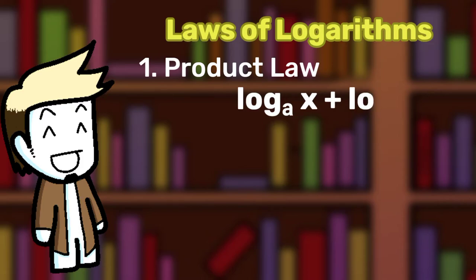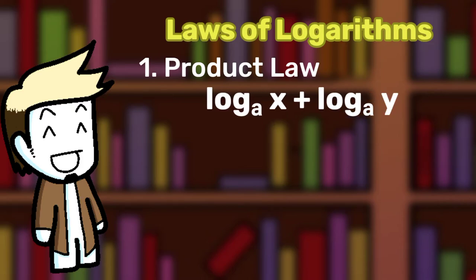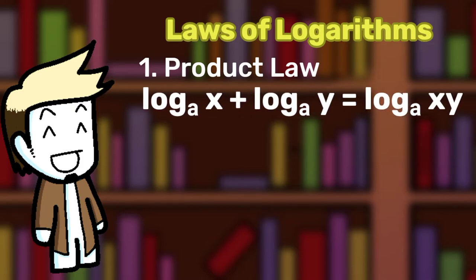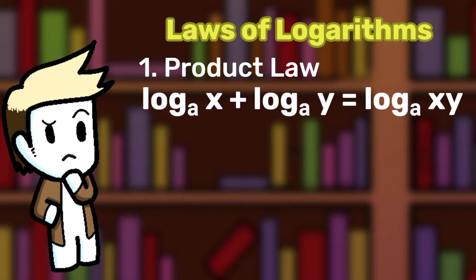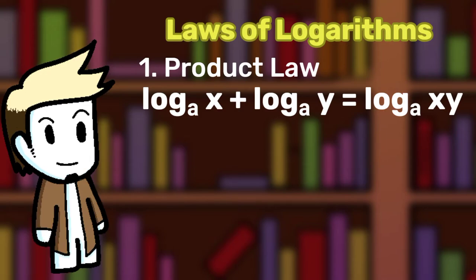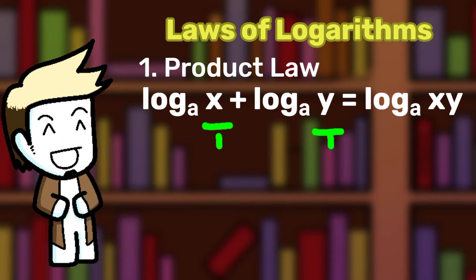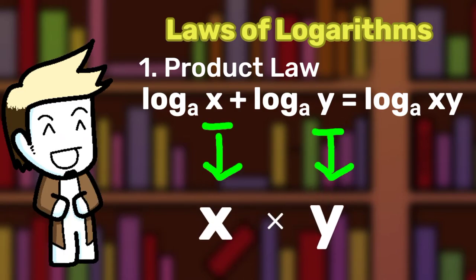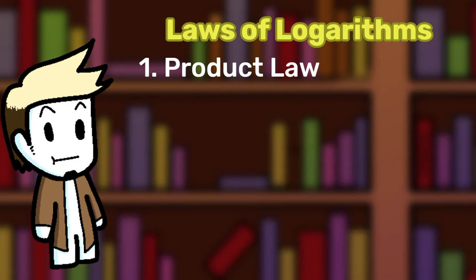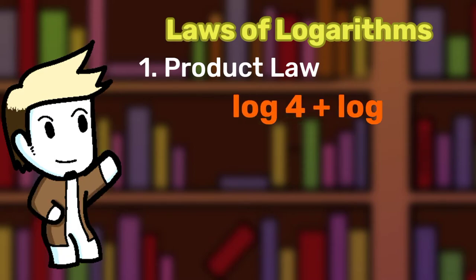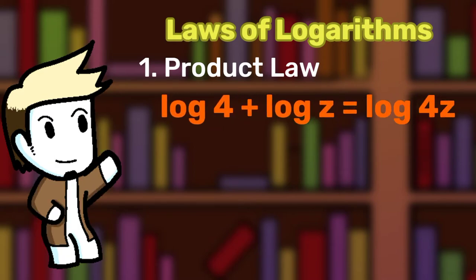Log base A of X plus log base A of Y equals log base A of XY. If you know the law of indices, this is similar to one of them. Basically, if you see X and Y, they are being simplified by being multiplied together. For example: log 4 plus log Z equals log 4Z. Or another example with both numbers: log base 6 of 20 plus log base 6 of 21 equals log base 6 of 420.